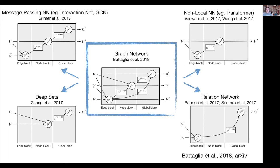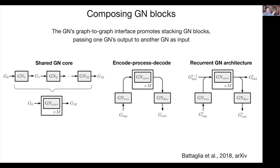For instance, a message passing neural network doesn't have a global property input or pooling from edges up to the global level like the full graph network block does, but in many ways it's similar. The magic of modern deep learning is that you have high-level languages like TensorFlow or Keras and you can think of neural network blocks as modules to string together. You can share the same graph network many times, have a deep graph network with stacked blocks, encode input, run processing, and decode — all the same box-and-arrow game.